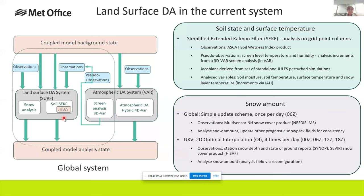The global snow analysis is really basic and long overdue an upgrade. Another key problem is that the system is not set up to work with an ensemble prediction system. The SEKF can't be run on each ensemble member because we'd need to run a separate set of standalone perturbed JOULES simulations for every ensemble member, and that's simply too expensive.